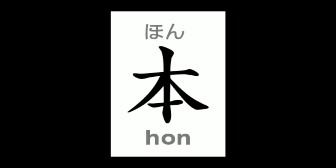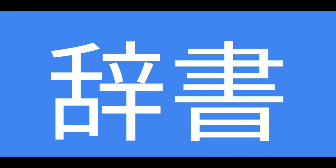This is the kanji Kami — Kami means paper. Here is the kanji for paper. Next, this is the kanji for Hon — Hon means book. And this is the kanji for Jisho — Jisho means dictionary.